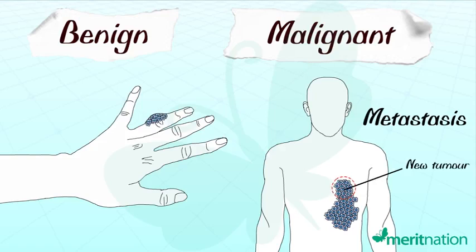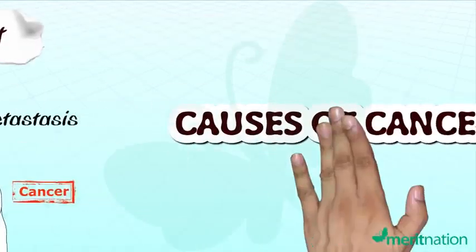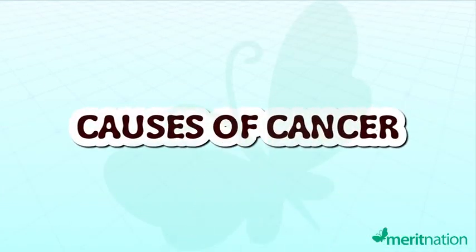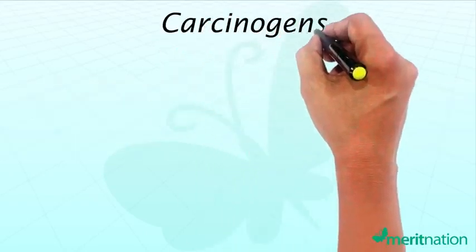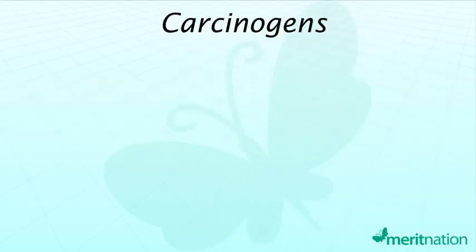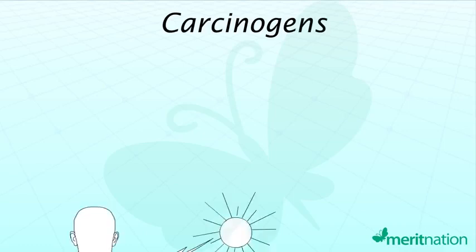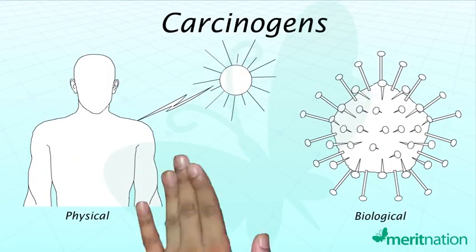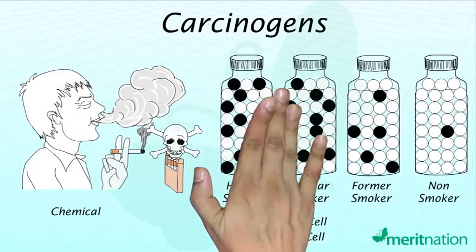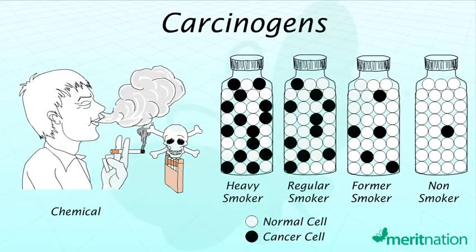Malignant tumors actually represent cancer. Now let us understand how cancer is caused. Cancer-causing agents, called carcinogens, involve physical, biological, and chemical agents that cause cancer.